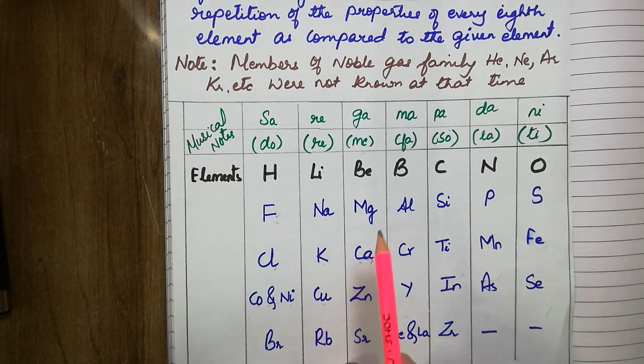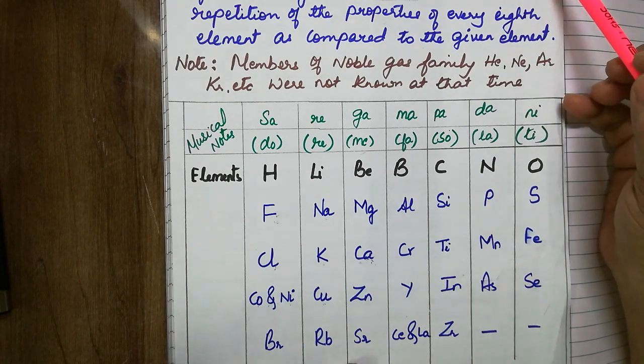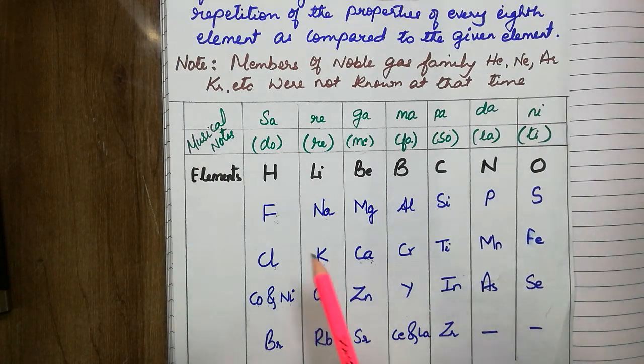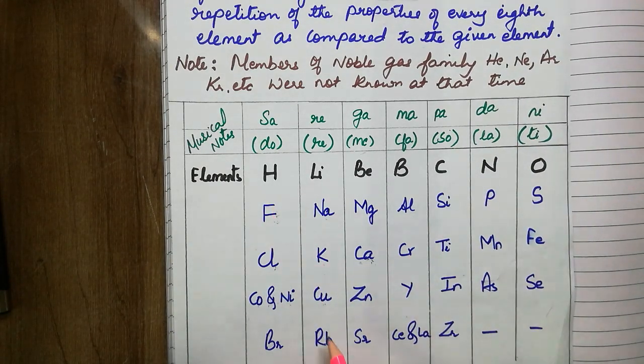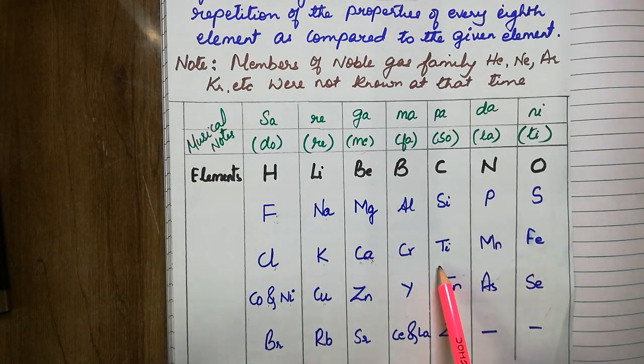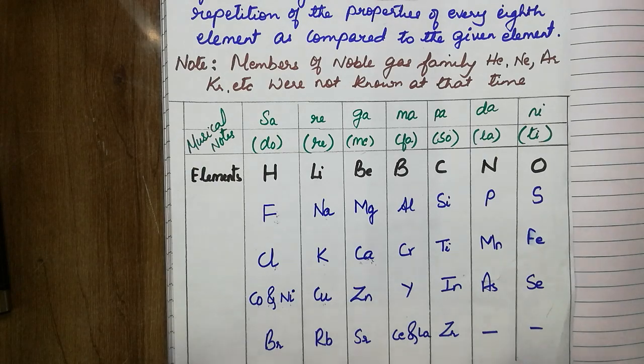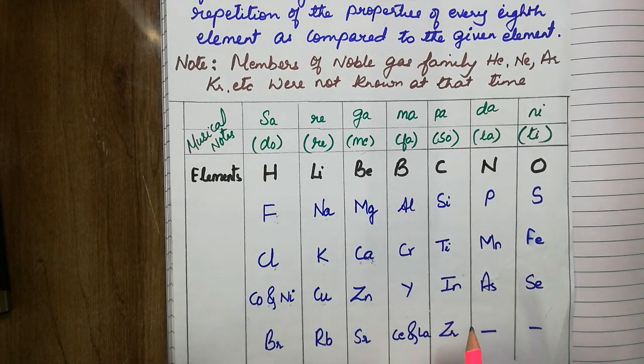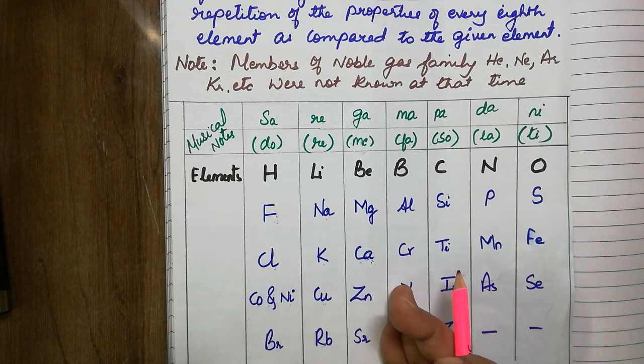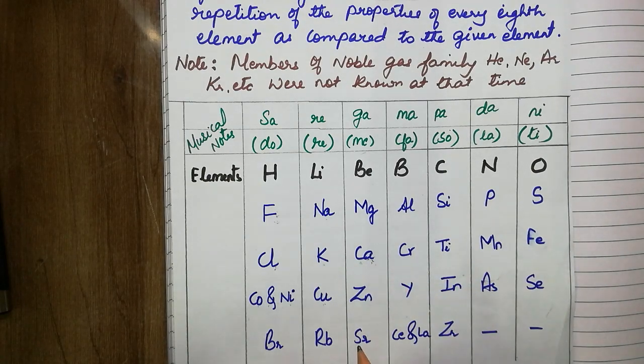And then, 56 elements were known during his time. You might have seen here there is no gap or anything. So he thought that only 56 elements existed in nature and no more further elements would be discovered. That was a major drawback. If any new element was discovered, their inclusion disturbed the table.